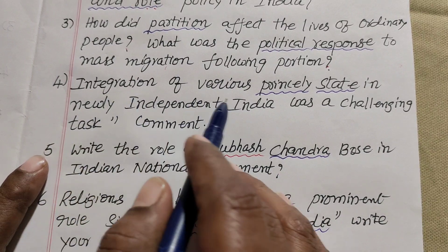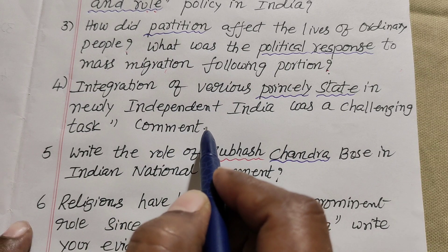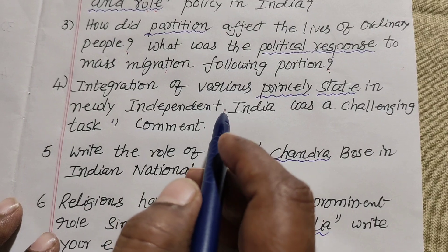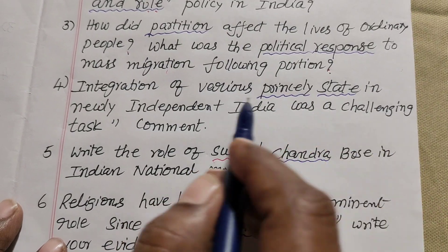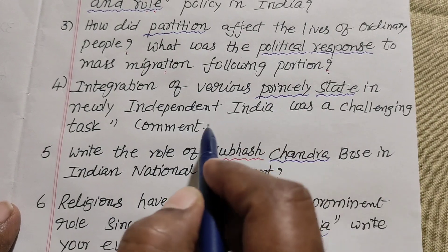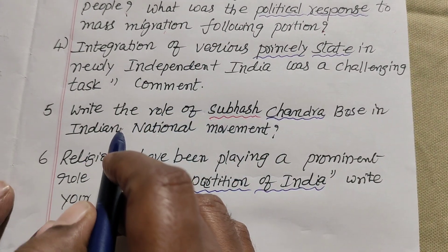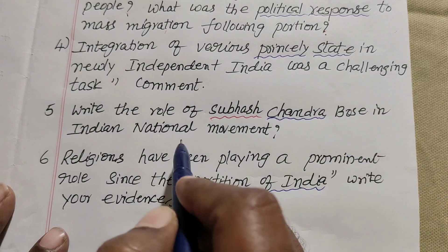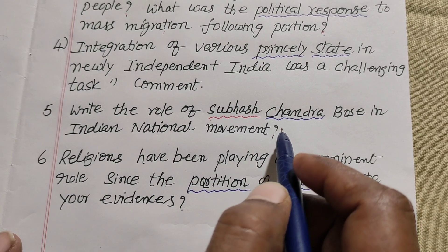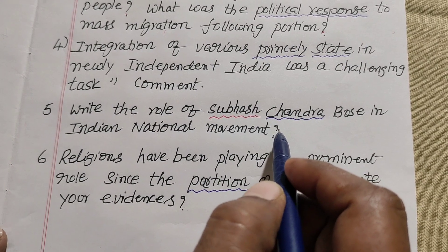Fourth question: how was building the new independent India a challenging task? We came to this point and were able to find our place. This is the first place we saw in India. Second key figure: Subhash Chandra Bose — his role in the Indian National Movement. Subhash Chandra Bose was stopped by the Indian National Army.